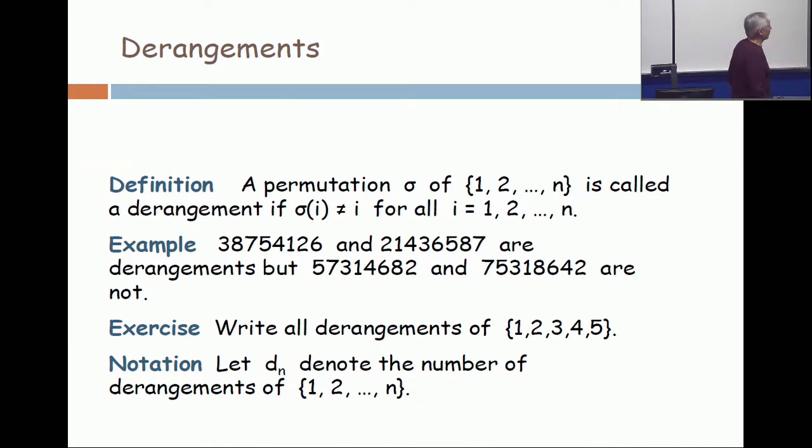On the other hand, 5, 7, 3, 1, 4, 6, 8, 2 is not a derangement. Do you see why? Integer i in position i. So those are derangements.